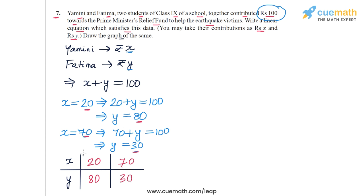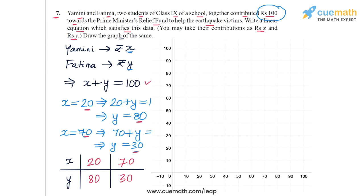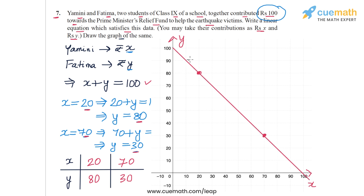Now we are going to plot the graph of the equation X plus Y equal to 100 using these two solutions. The horizontal axis represents X, which is the contribution made by Yamini, and the vertical axis represents Y, which is the contribution made by Fatima. We plot the point (20, 80) and the point (70, 30), then draw the line passing through these two points. This line is the graph of the equation X plus Y equal to 100.